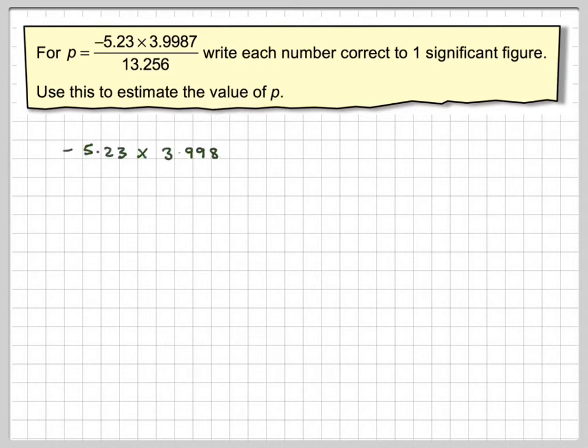So, writing down the original expression, taking each one on its own, minus 5.23, well, to one significant figure, that's going to be minus 5. That 2 is not going to have an effect on the 5, so it's going to become 5.